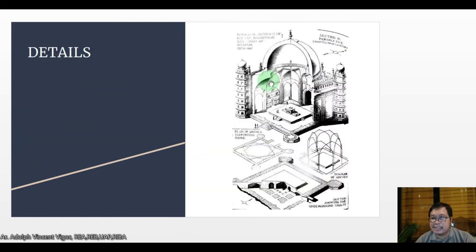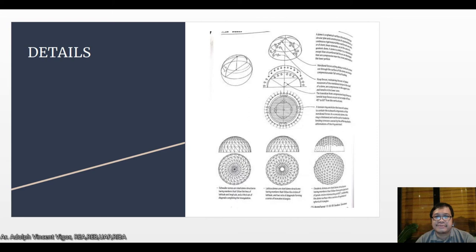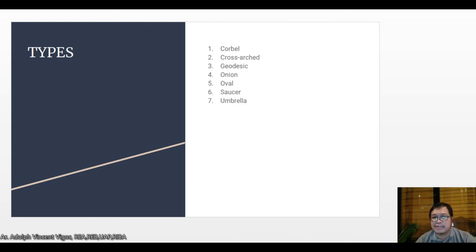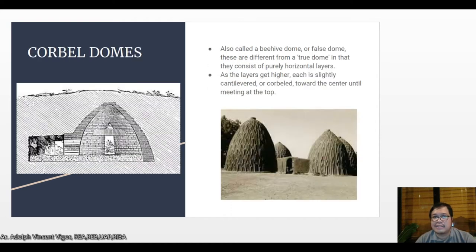The details can be found in our history of architecture books, or in Time Saver Standards — the textbooks have a lot of details on domes. There are different types of domes: you have the corbel, the cross arch, the geodesic, the onion, the oval, the saucer, and the umbrella.